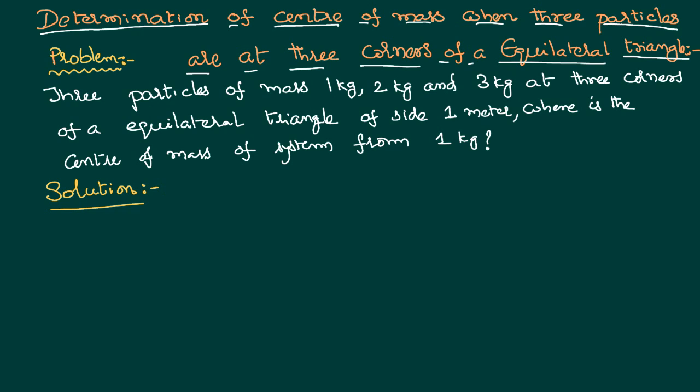They are placed at the 3 corners of an equilateral triangle. Let us imagine, this is our equilateral triangle where all sides are equal, at each corner there is an angle of 60 degrees.